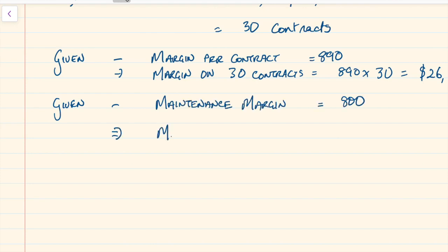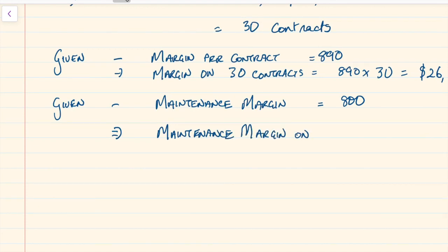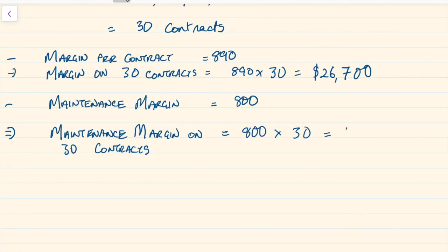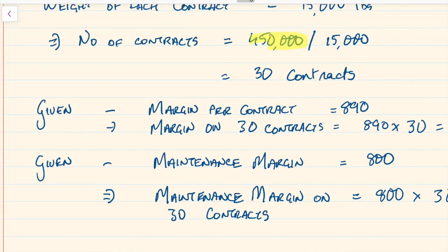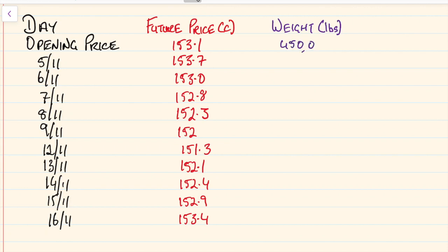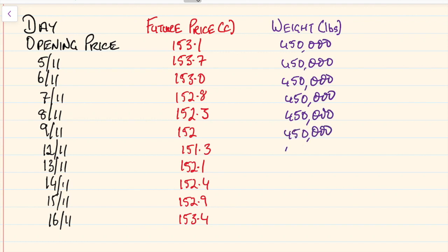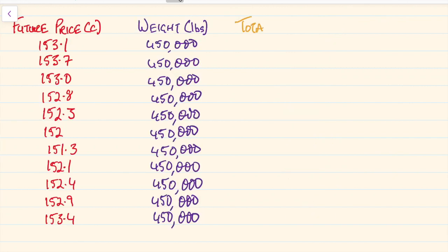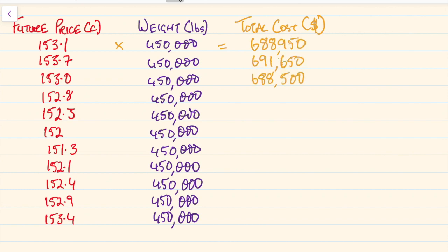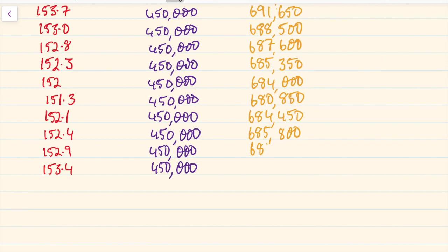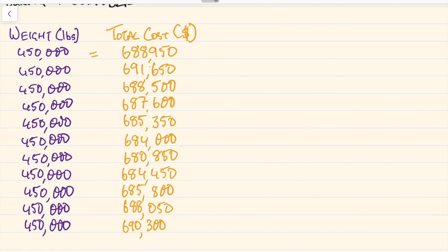We're also given the maintenance margin, which is $800 per contract. Multiplying $800 by 30 contracts gives us a maintenance margin of $24,000. With a total weight of 450,000 pounds, the futures price is given in cents per pound, so we multiply each cents-per-pound price by the total weight and convert from cents into dollars. For example, the first price of 153.1 cents per pound multiplied by 450,000 gives $688,950.